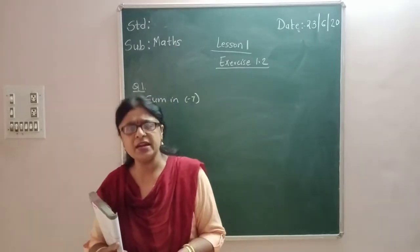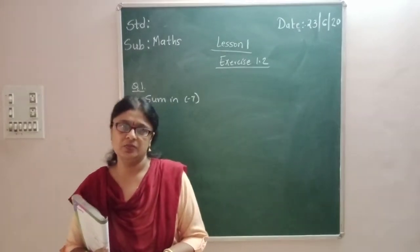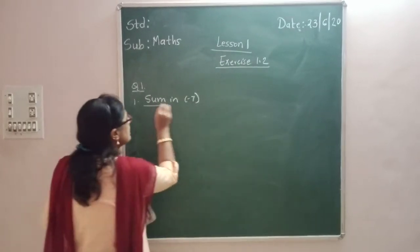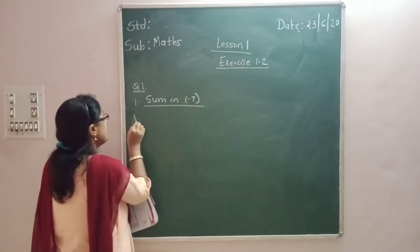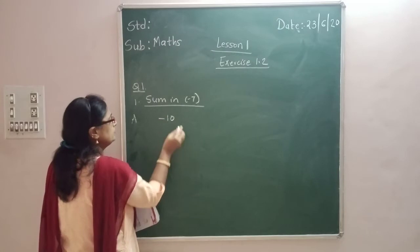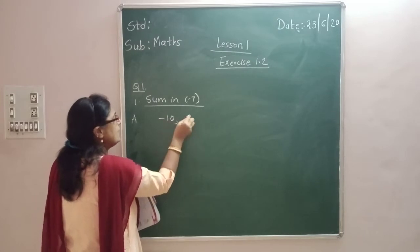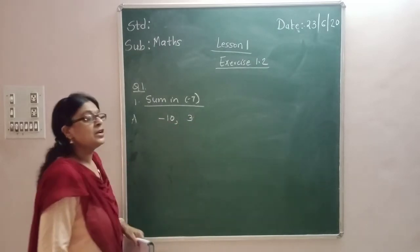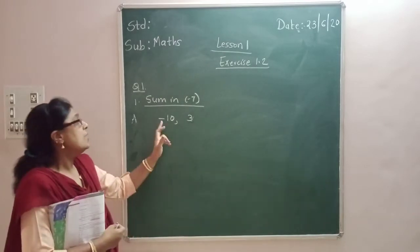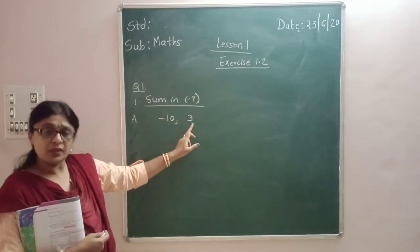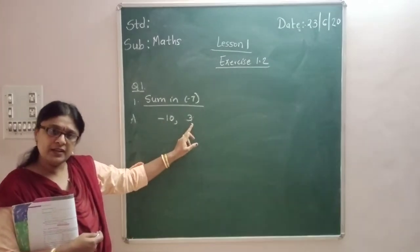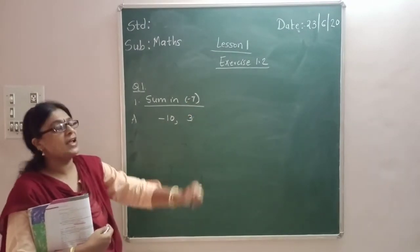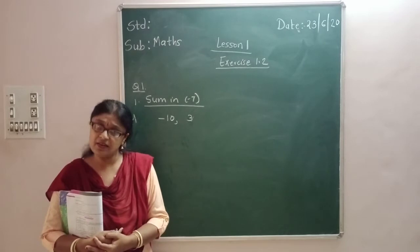There can be many integers. For example, if I write minus 10 and 3 — sorry, minus 10 and 3. These are the two integers: minus 10 and 3. Both are integers, and when I add them, minus 10 plus 3, I get the answer as minus 7.